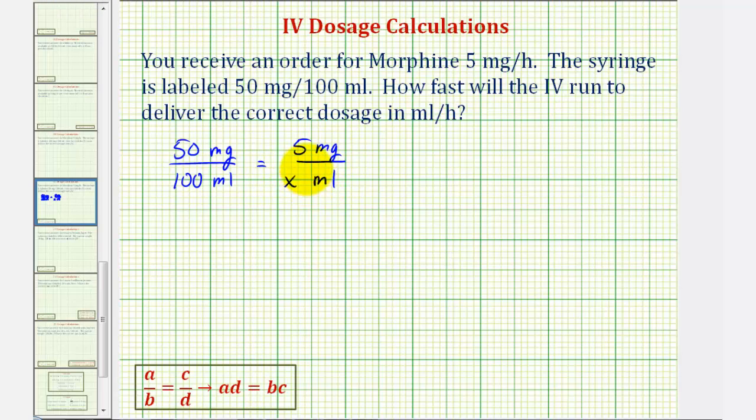And before we cross multiply, notice how the units on the top are the same and the units on the bottom are the same. If they weren't the same, we'd have to perform a conversion before cross multiplying.